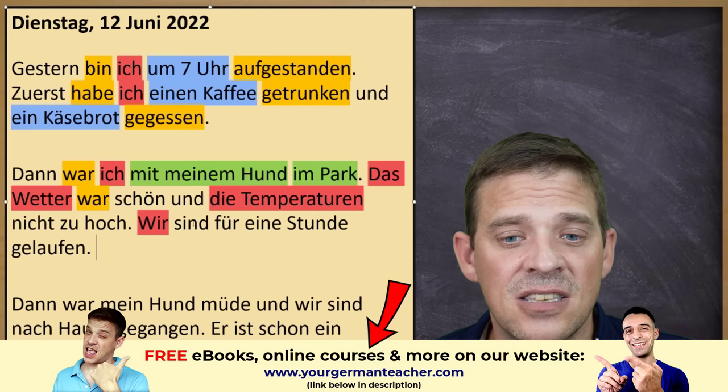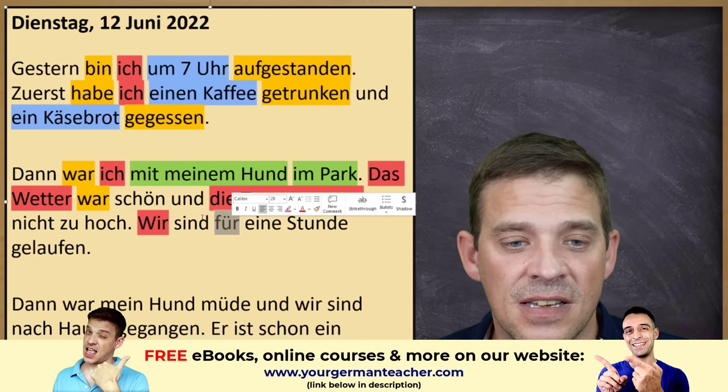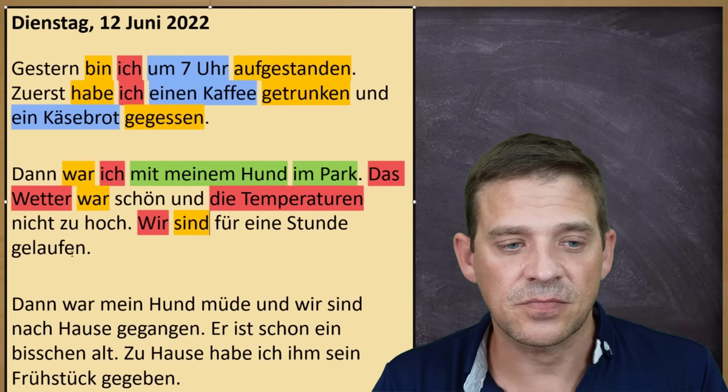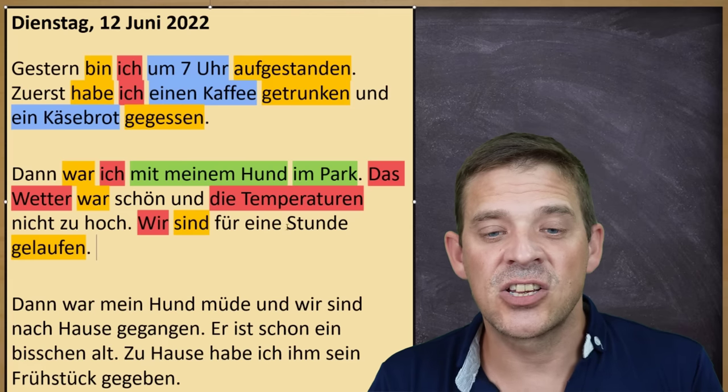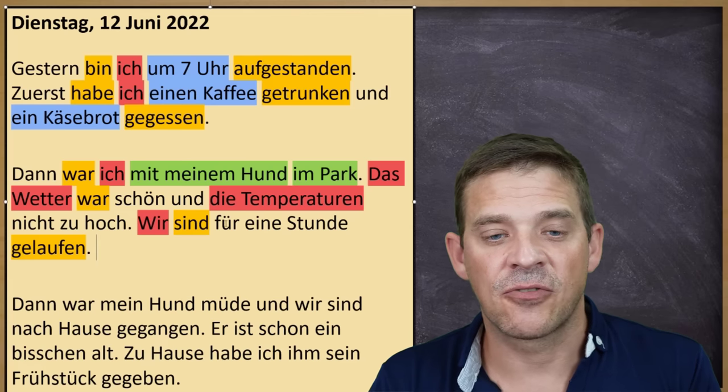Sind für eine Stunde gelaufen — another sentence in perfect. Sind ist das Hilfsverb, gelaufen ist das Partizip von laufen. Then we have für eine Stunde. The preposition für is always with Akkusativ, so everything after the preposition — the object, noun, pronoun — is in Akkusativ. Because the preposition is für plus Akkusativ, eine Stunde is also in Akkusativ. We put this in blue.